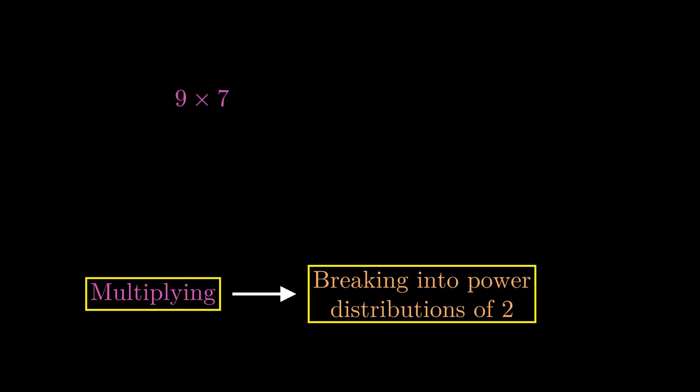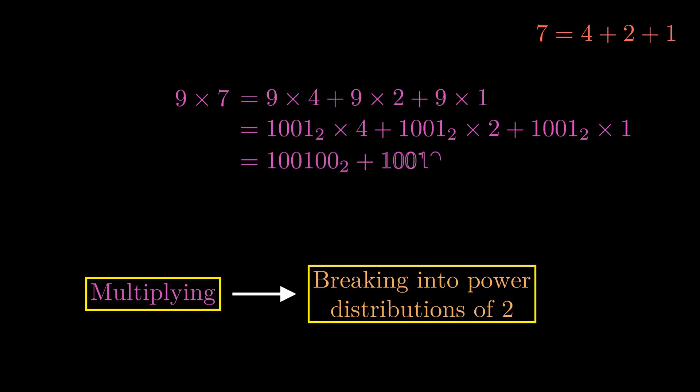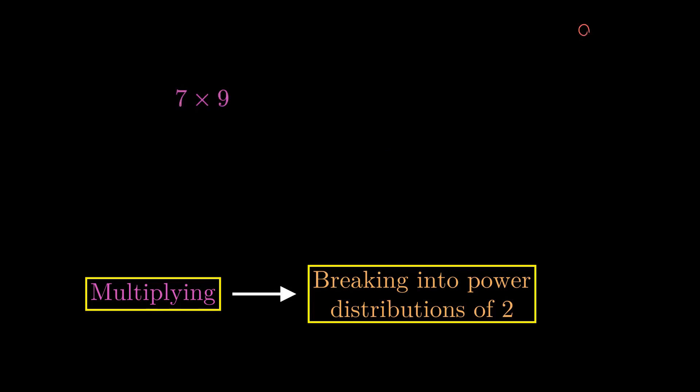Say you now multiply 9 and 7. Now we can distribute 7 into the powers of 2 and write the multiplication in the form 9 into 4 plus 9 into 2 plus 9 into 1. Multiplying by 4 is adding 2 zeros at the right. Multiplying by 2 is adding 10 to the right. And multiplying by 1 is the number itself. Now you add all the additive components and in decimal that amounts to 63. For 7 into 9 you will break 9 into 8 and 1 and write the product as 7 into 8 plus 7 into 1. And do the easy task of adding zeros and adding the additive components. Isn't that fabulous?